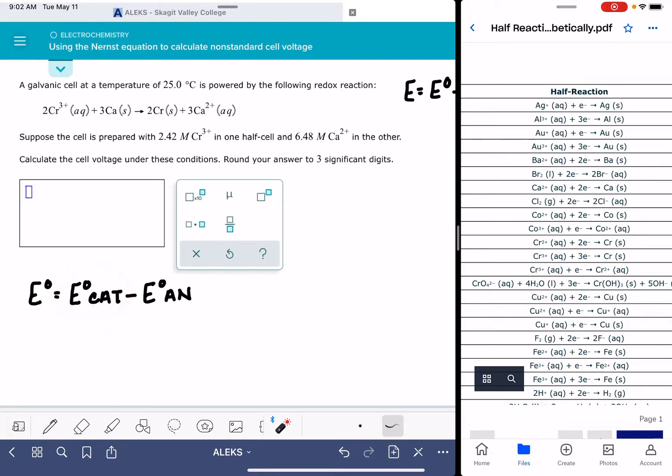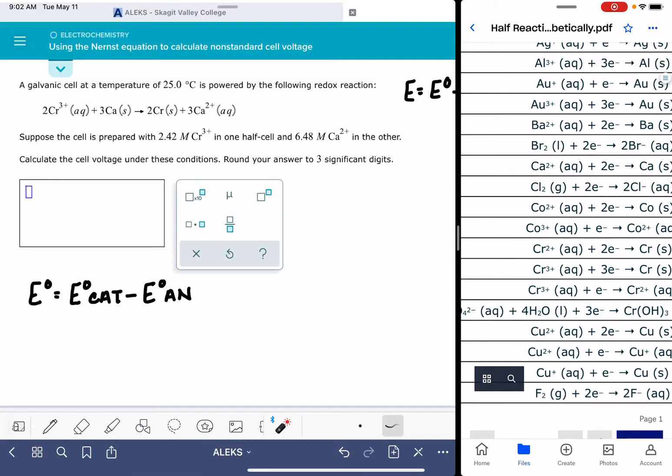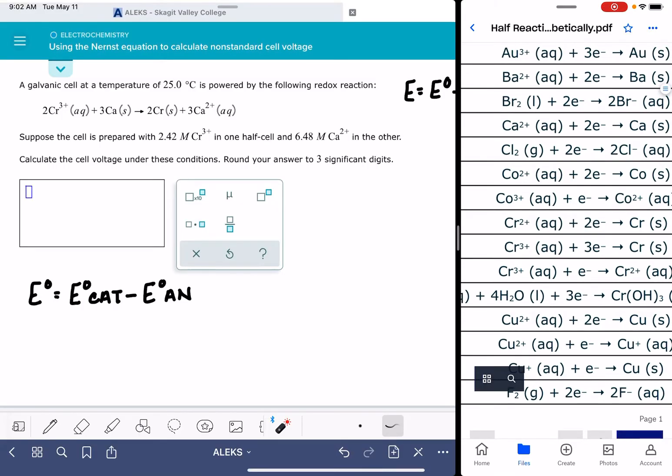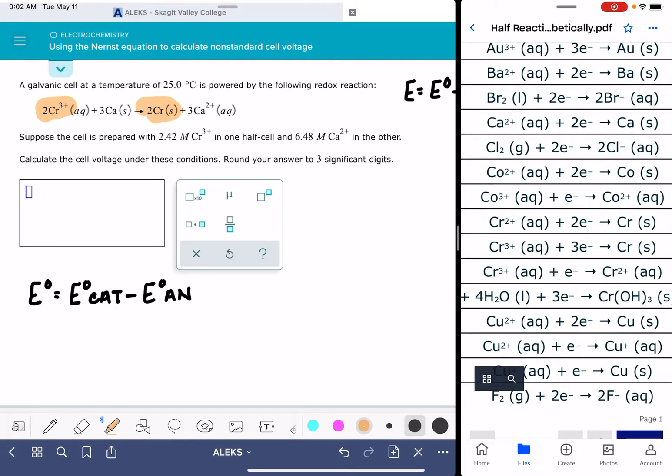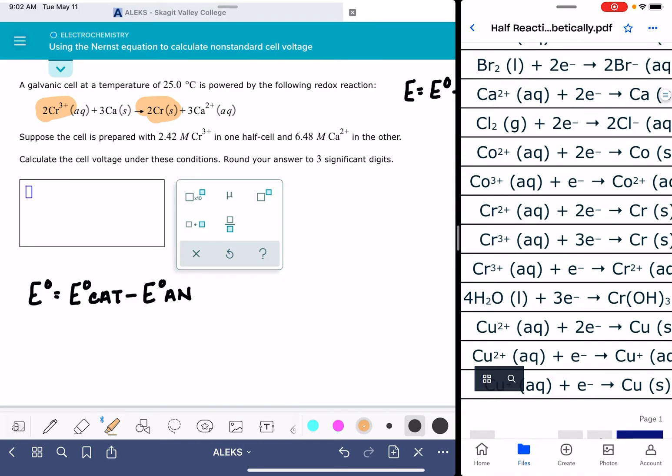So the first thing that we want to do on our table of half reactions is find our reduction reaction. If we look at this overall reaction, our chromium going to chromium is the reduction reaction. If you're having a hard time seeing that, I'll talk about that a little bit more when we look at our reduction potential table.